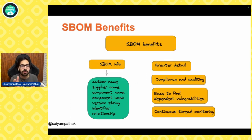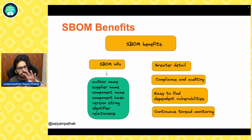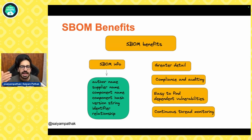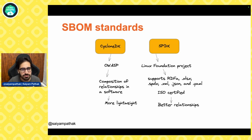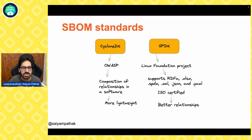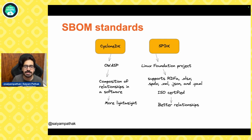SBOM benefits: SBOMs give you common info like author name, supplier name, component name, hash, version string, identifier, and relationships — providing greater detail about your software. It helps with compliance and auditing, and lets you find dependencies easily in a continuous manner in CI/CD — anytime you release a new version, you can re-analyze the SBOMs to see if new vulnerabilities were introduced. Two common standards for SBOMs: CycloneDX — an OWASP composition analysis standard, lightweight; and SPDX — a Linux Foundation project supporting RDFA, XLS, XML, JSON, YAML, ISO certified, with better relationship support.